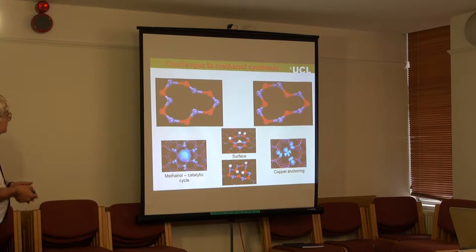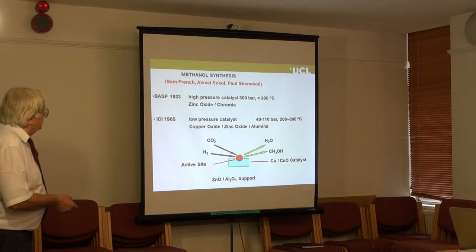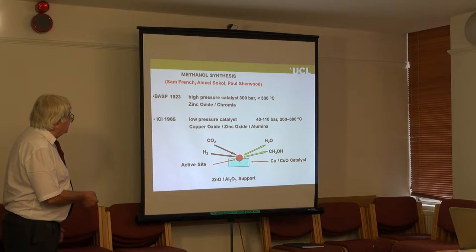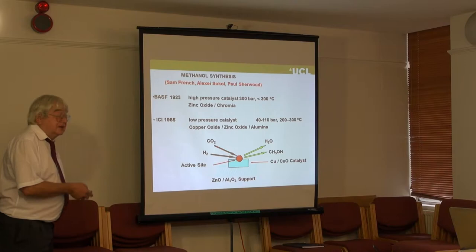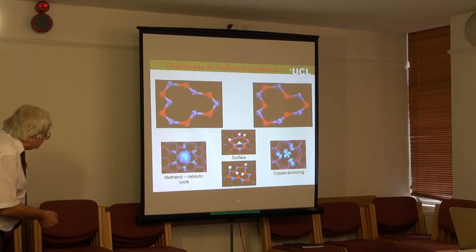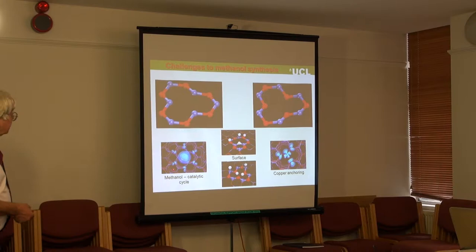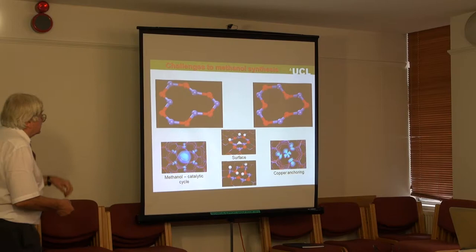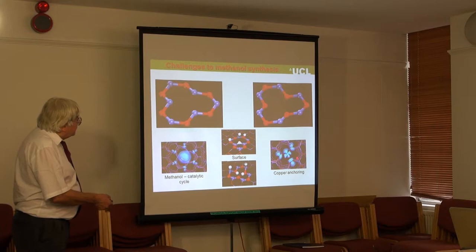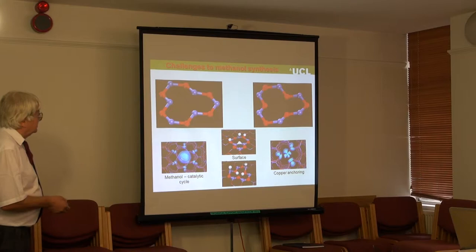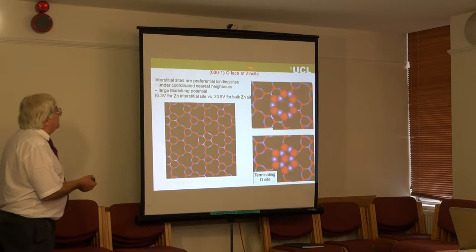Understanding methanol synthesis involves a number of challenges. The first is understanding the mechanism of surface hydrogenation of zinc oxide, because the reaction involves hydrogen, CO, and CO2, and the first step is to dissociate hydrogen from the surface. The second is understanding how hydrogen reacts with CO and CO2 to make methanol. We know the catalysis takes place on the surface of zinc oxide, promoted by copper. The third problem — the role of copper — I won't address today.